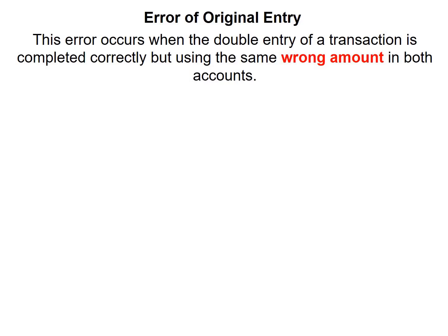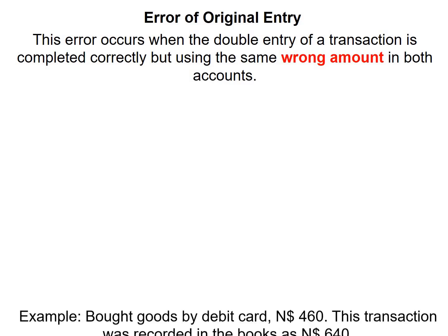The next error we have is the error of original entry. This error occurs when the double entry of a transaction is completed correctly but using the wrong amount in both accounts. So for this error it deals with the wrong amount. Let's have a look at an example.